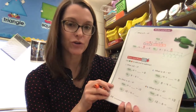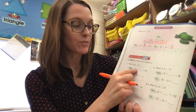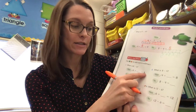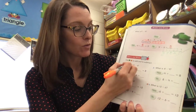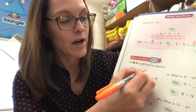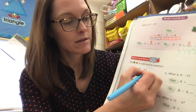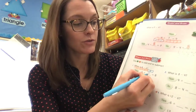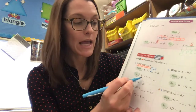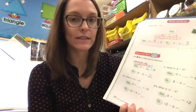Let's do a couple more and then you can try it on your own. What is 8 take away 6? Think: 6 plus how much more will give you 8? So let's draw 6 cubes: 1, 2, 3, 4, 5, 6. I'm going to change colors. 7, 8. How many more cubes did we have to draw? How many blue cubes are there? 1, 2. So 6 plus 2 equals 8, which means 8 take away 6 equals 2.